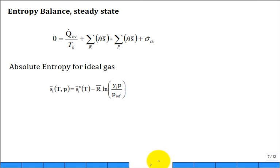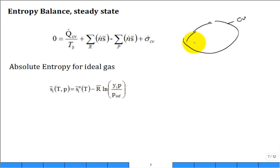Now that we've solved the first law, we talk about the second law of thermodynamics applied to ideal gas mixtures undergoing combustion. You take the same control volume from the first law — reactants flowing in, products flowing out — and you write the second law for that control volume at steady state, so the left-hand side is zero.